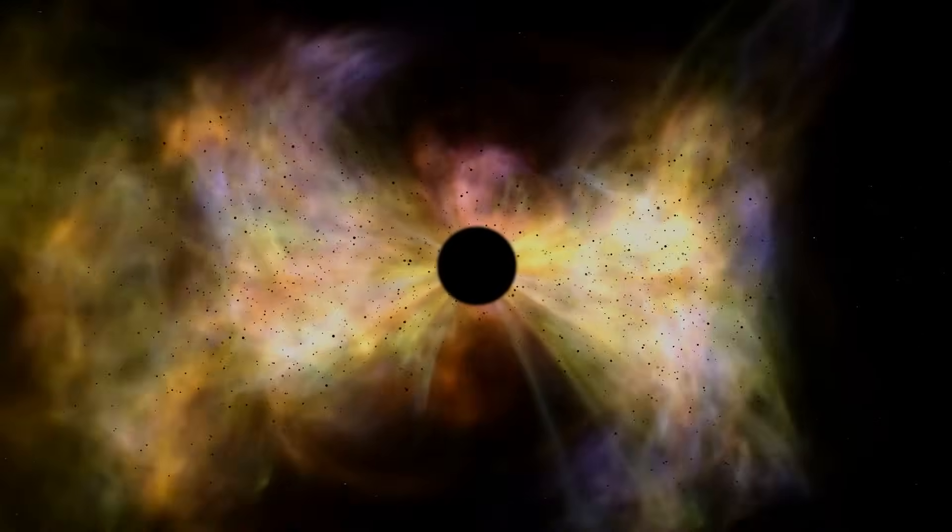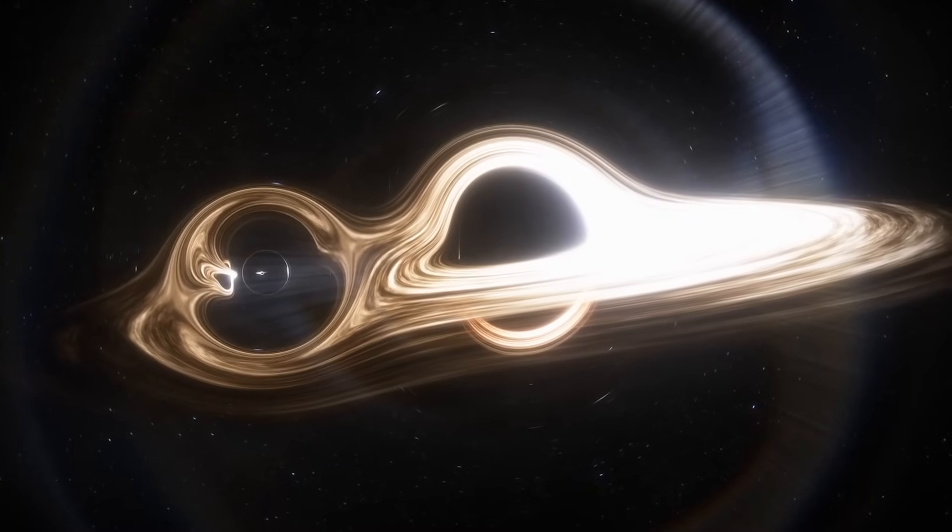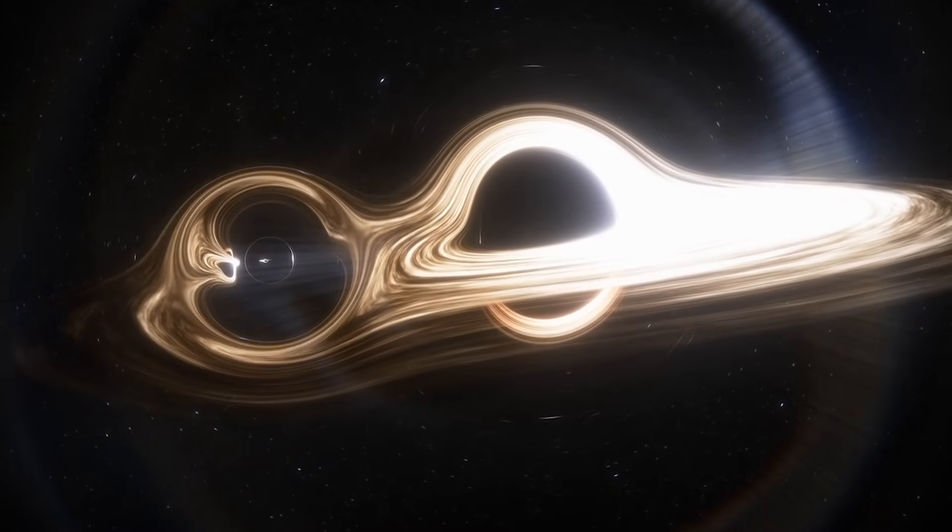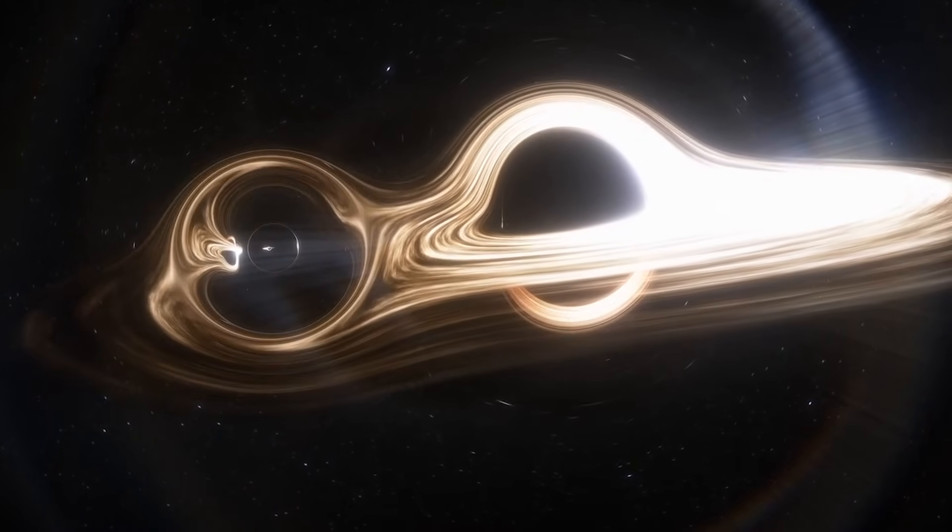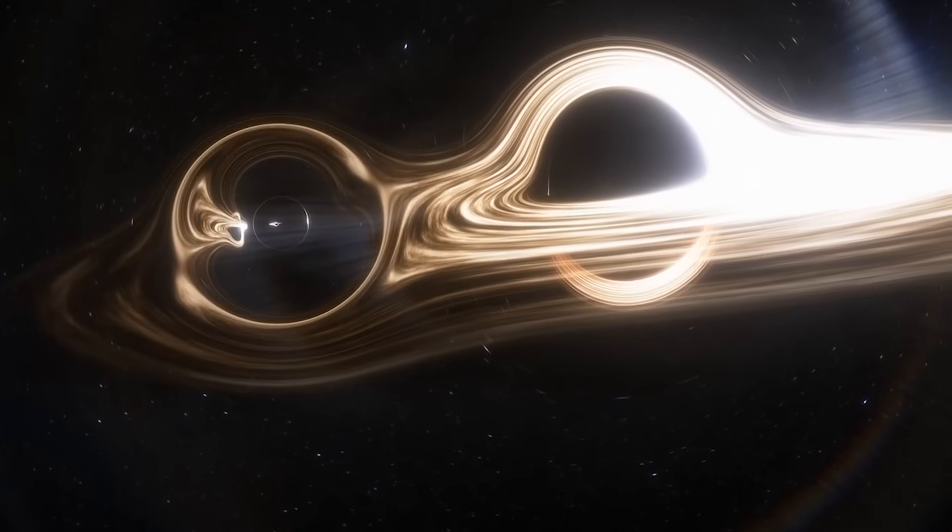At the time, we still lacked an actual image of a black hole, but scientists proposed that the detected X-rays came from the bright star losing material that was then swallowed up by the dark unseen object next to it.